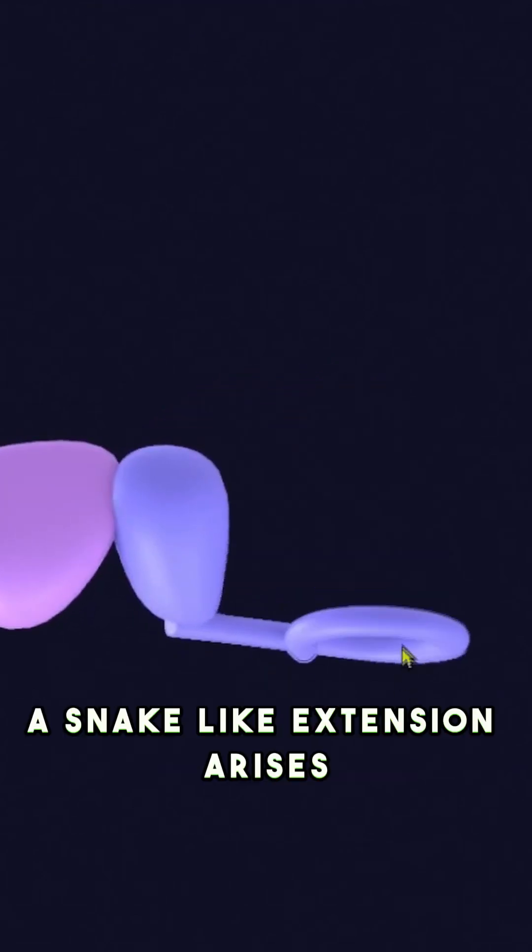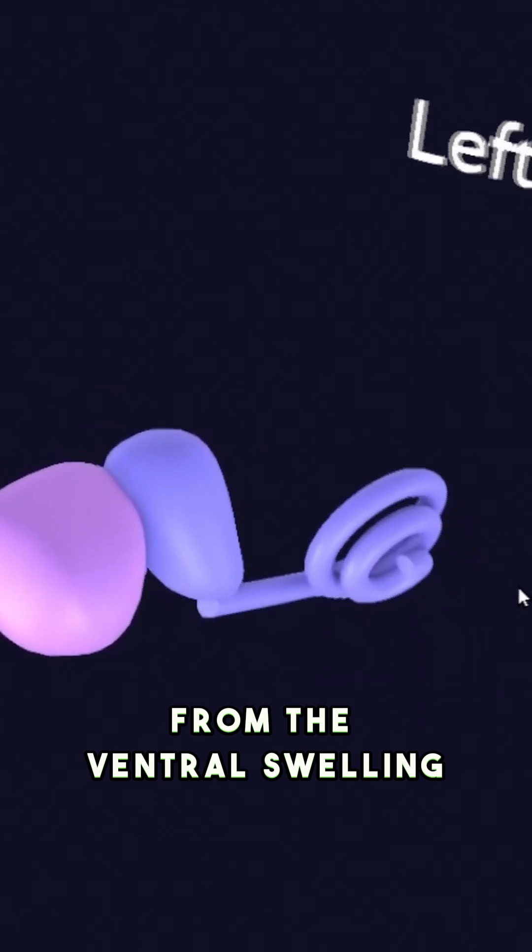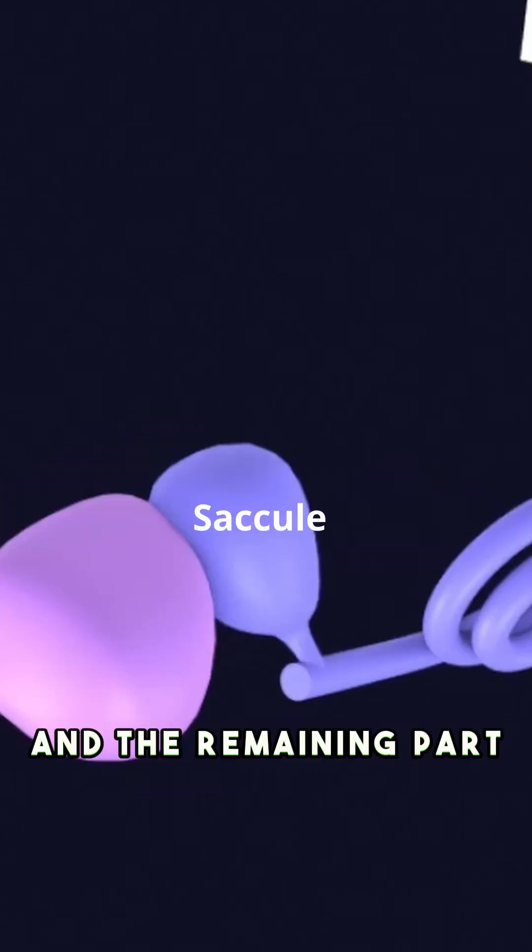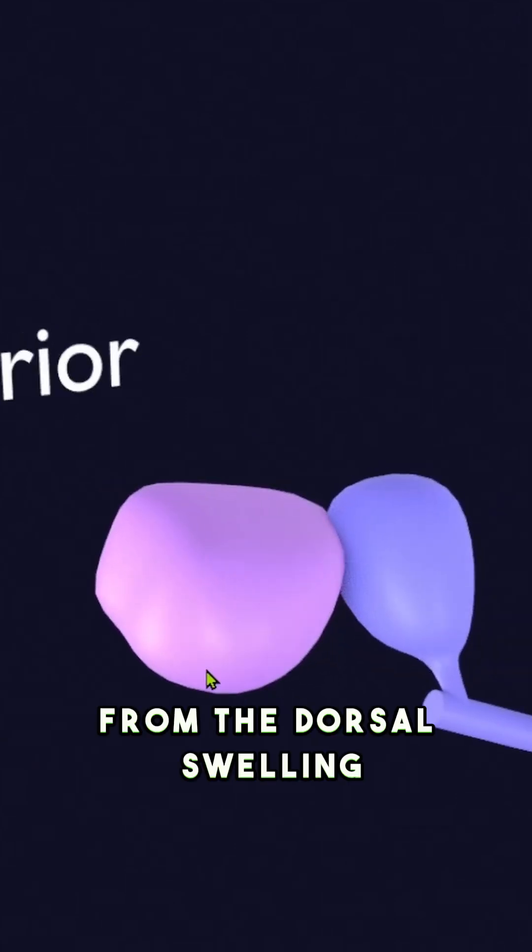This vesicle then divides into ventral and dorsal parts. A snake-like extension arises from the ventral swelling that twists like a snail to form the cochlea, and the remaining part of the swelling forms the saccule.